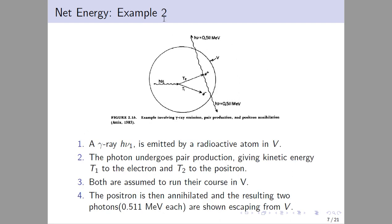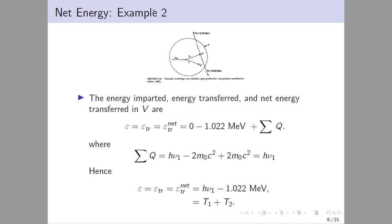In example 1, photon H_ν1 enters volume V with T1 and T2 emitted. The photon undergoes pair production, giving kinetic energy T1 to the electron and T2 to the positron. Both run their course in V. The positron is then annihilated, producing two photons of 0.511 MeV each, which escape from V. The energy imparted, energy transfer, and net energy transfer in V are calculated accordingly.